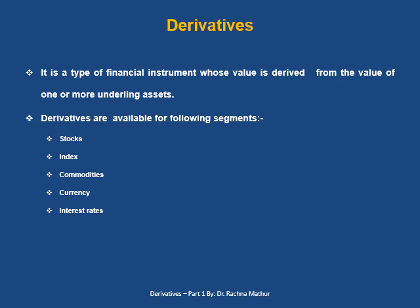What are derivatives? Derivatives are the financial instruments whose values are derived from the value of underlying assets. Underlying assets can be one or more — it can be equity, forex, or any other index.